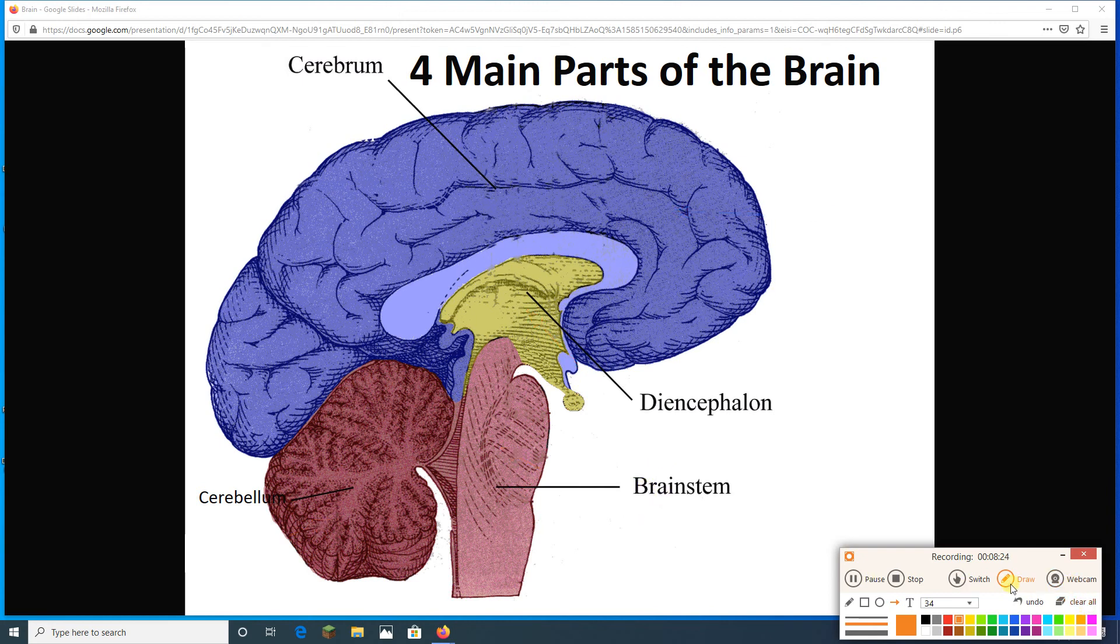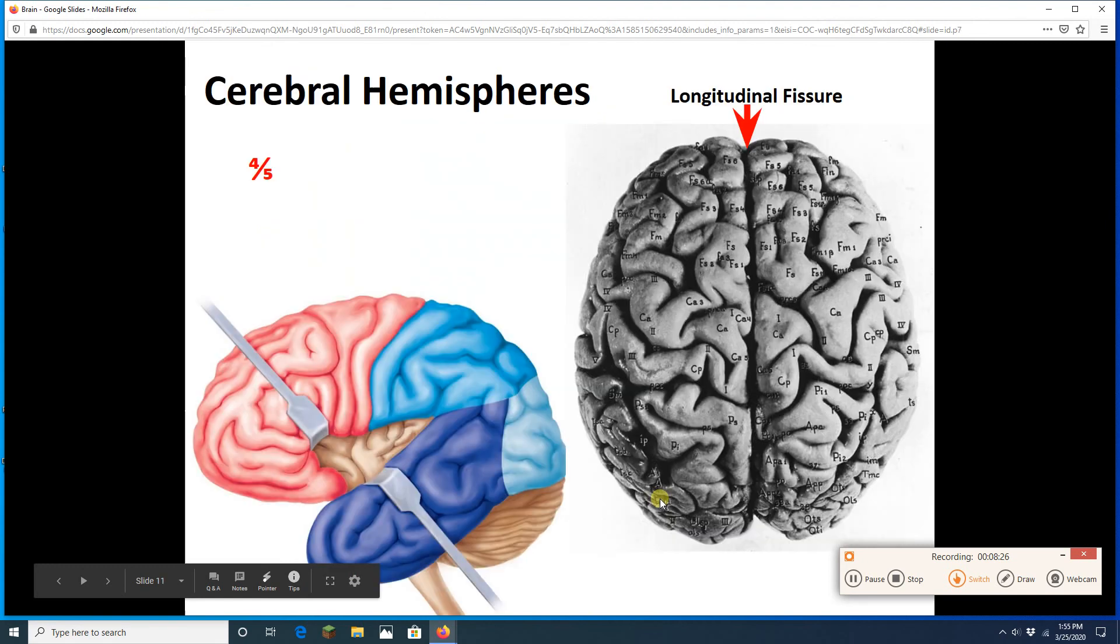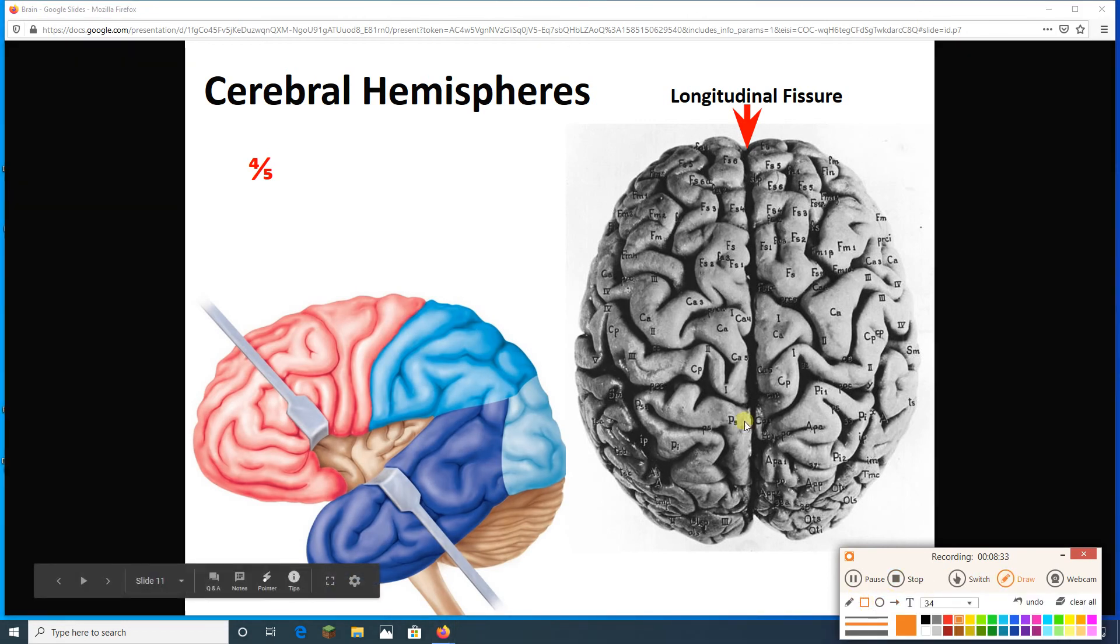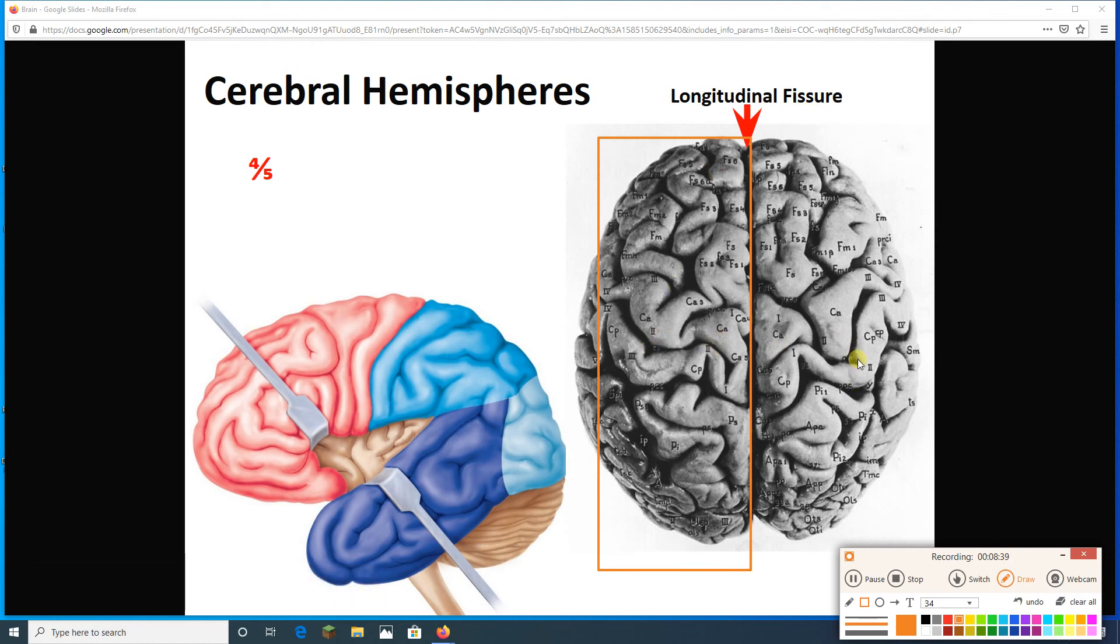Let's start with the cerebrum. The cerebrum is actually separated into two halves. There are going to be two cerebral hemispheres. So, I put a box around one, and then you can see the other one as well. The two cerebral hemispheres are separated by a longitudinal fissure.